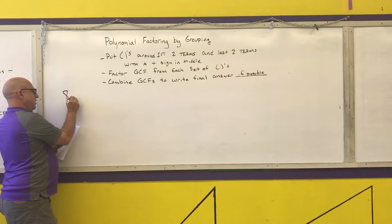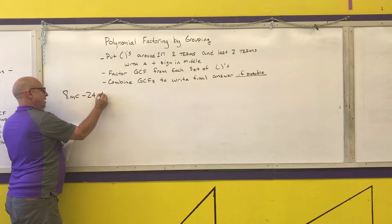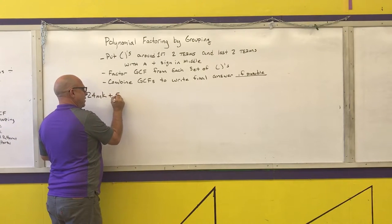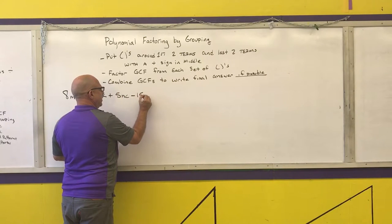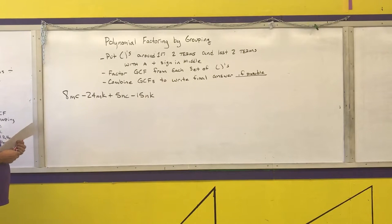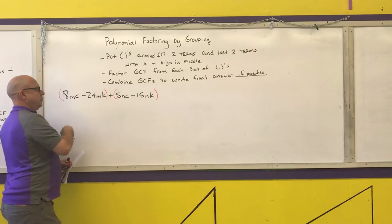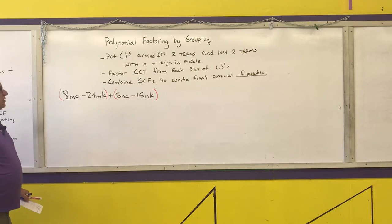Next example: 8MC minus 24MK plus 5NC minus 15NK. Step one — parentheses around the first two, parentheses around the last two, plus sign in between. Step two — factor the greatest common factor out of each set of parentheses.